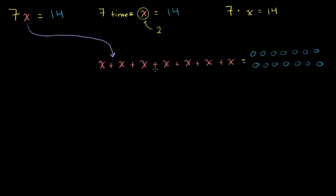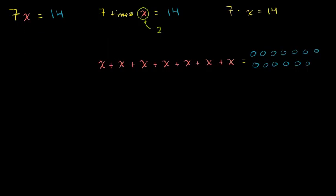The reason I drew it out this way is so you really understand what we're going to do when we divide both sides by 7. In general, whenever you simplify an equation down to a coefficient — that's just the number multiplying the variable — times a variable equal to something else, you want to divide both sides by the coefficient. So dividing both sides by 7: 7 times something divided by 7 is just that original something, the 7's cancel out, and 14 divided by 7 is 2. So x is equal to 2.